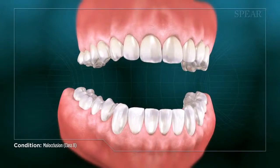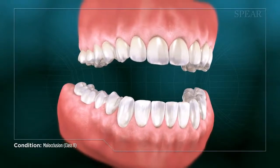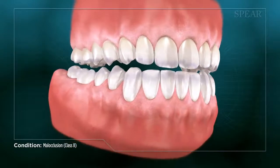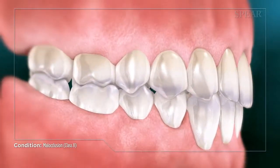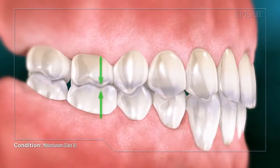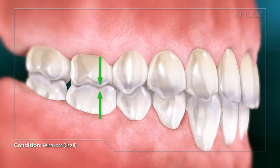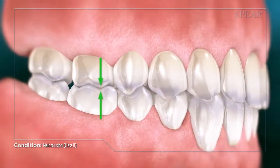Occlusion is a term dentists use to describe how teeth come together. When a patient has proper occlusion, it means that their teeth touch as intended, much like gears coming together in an engine.